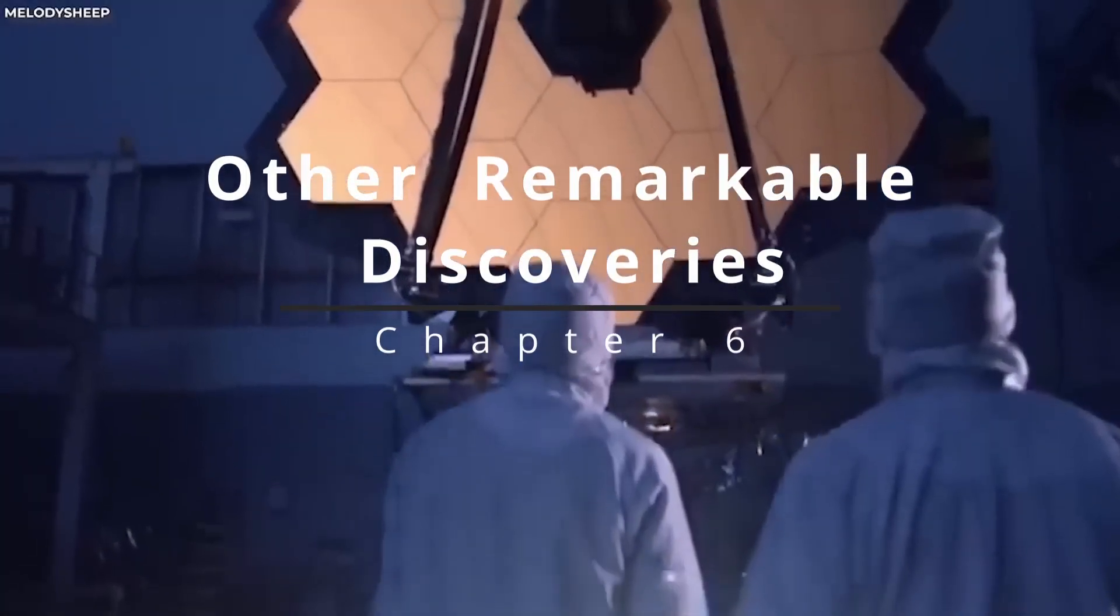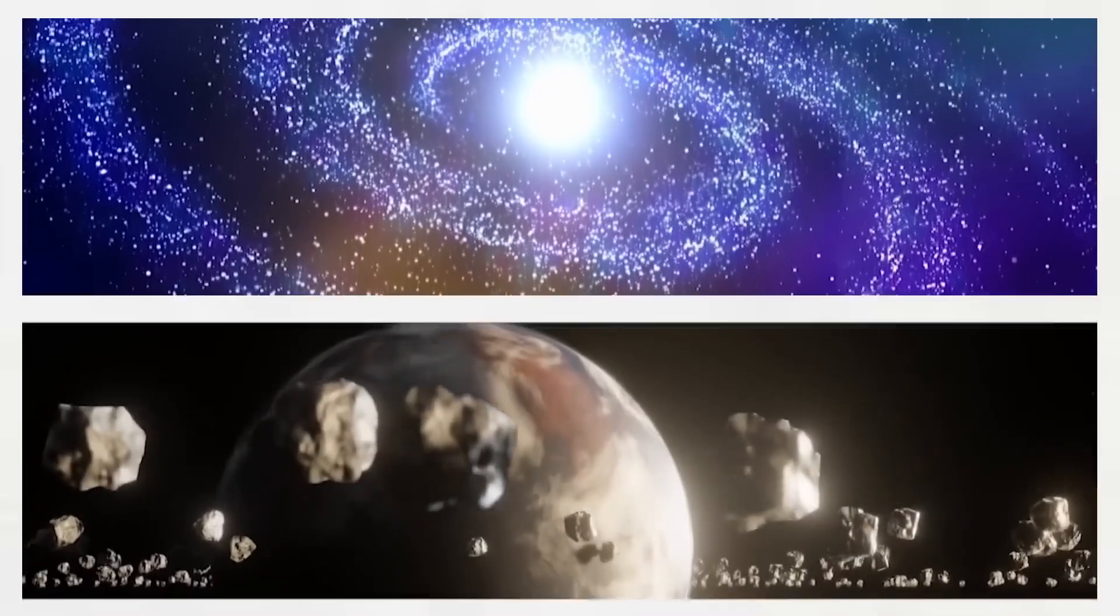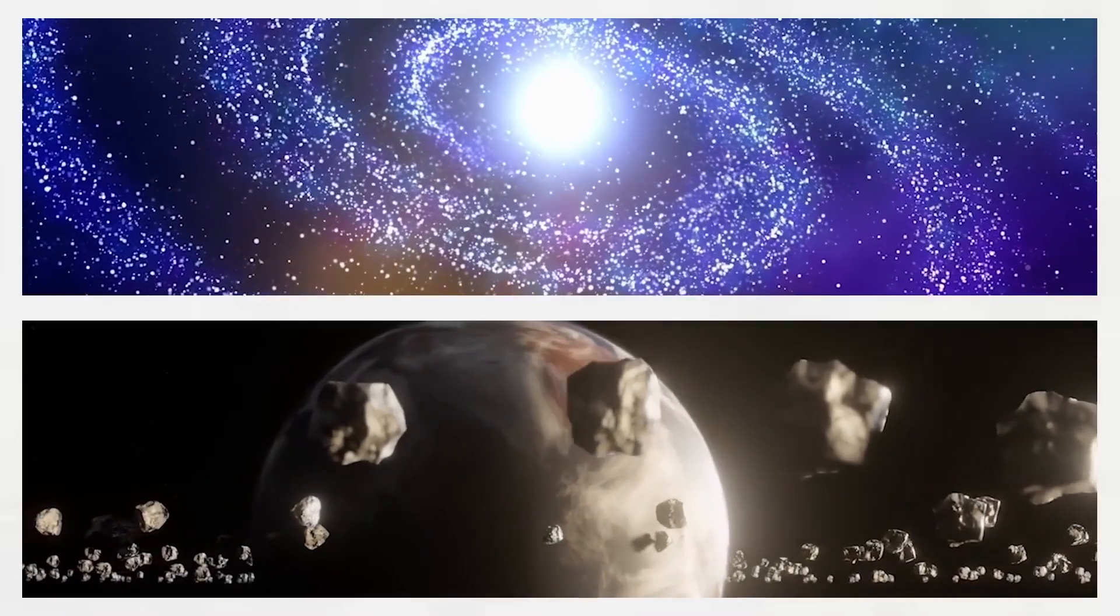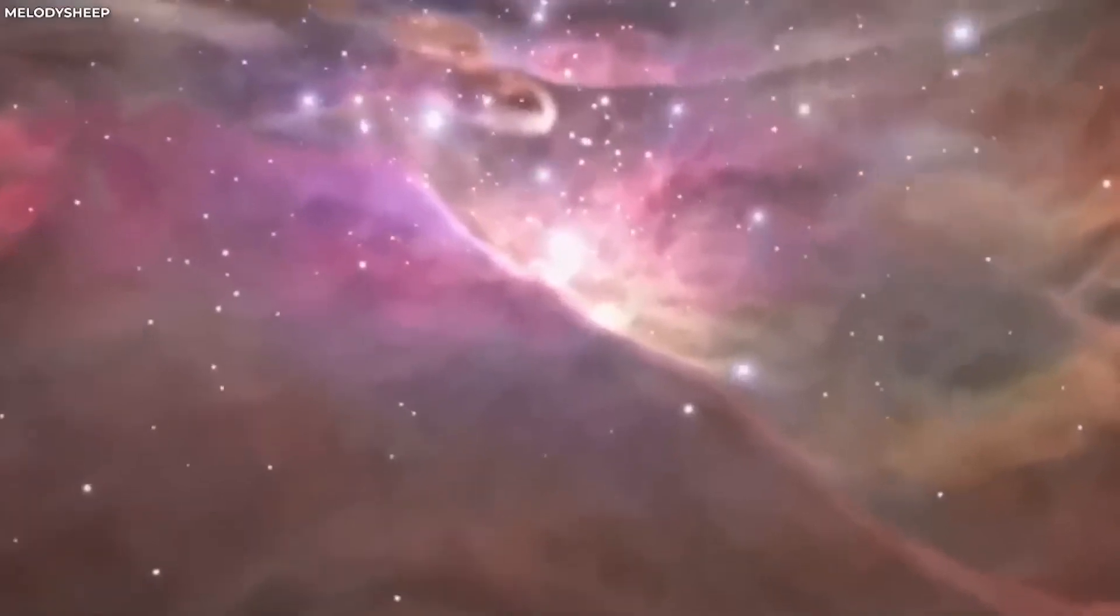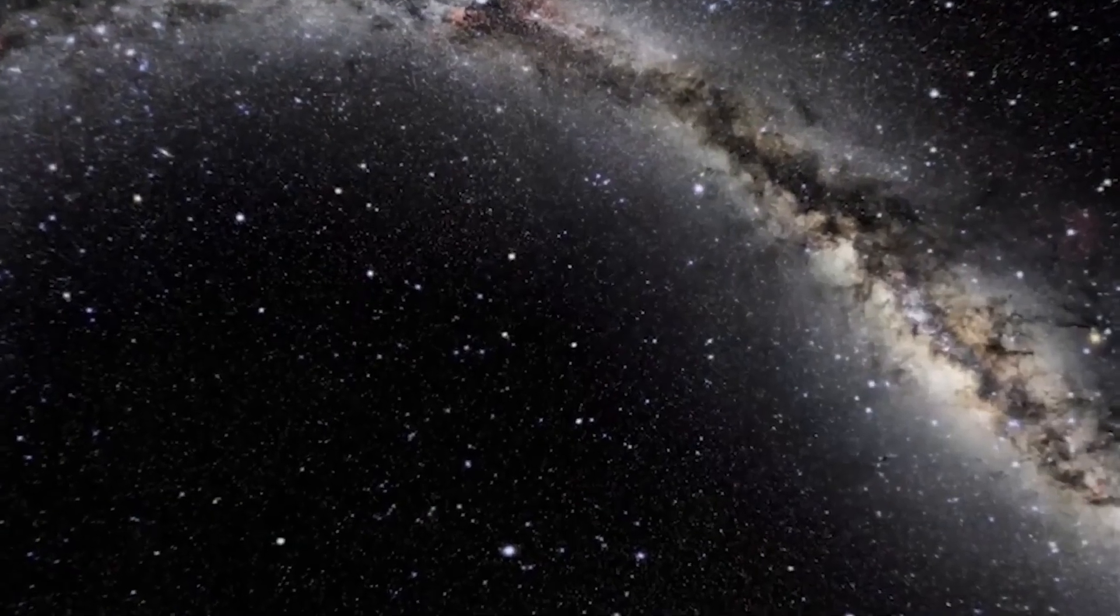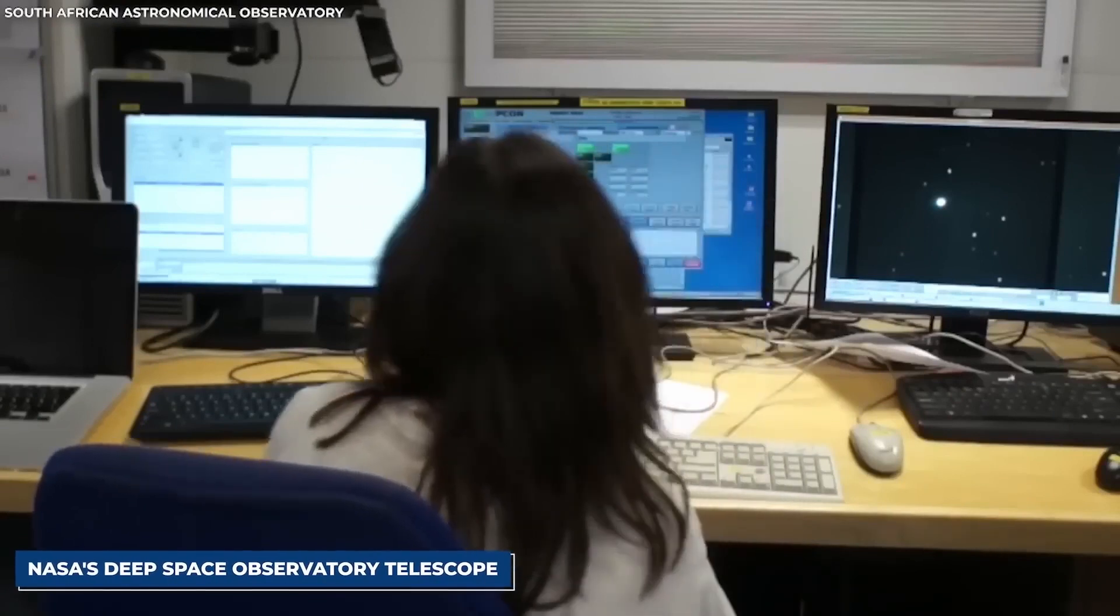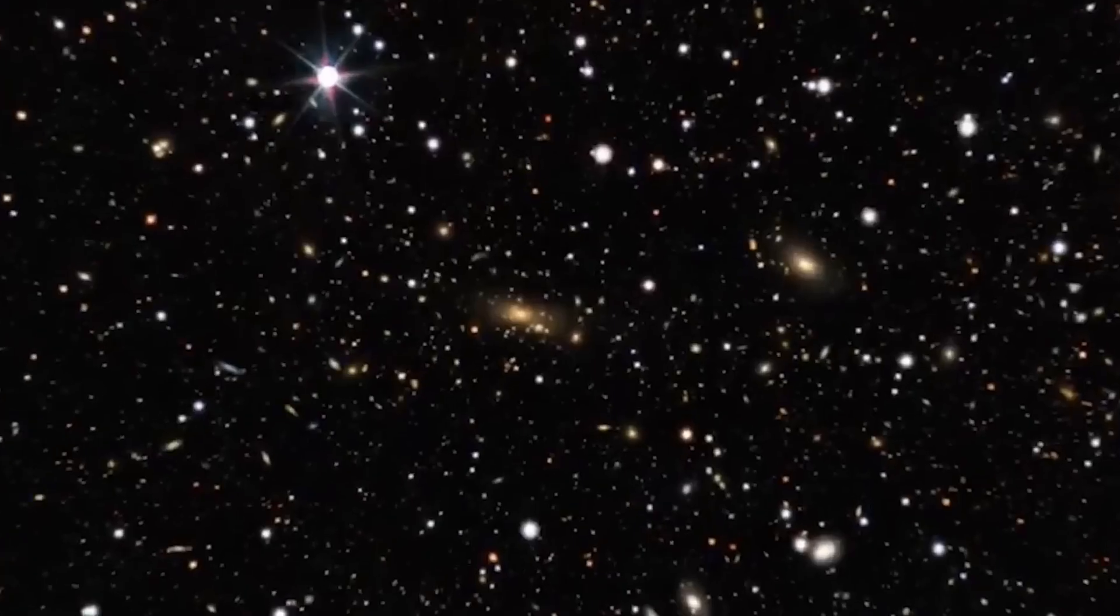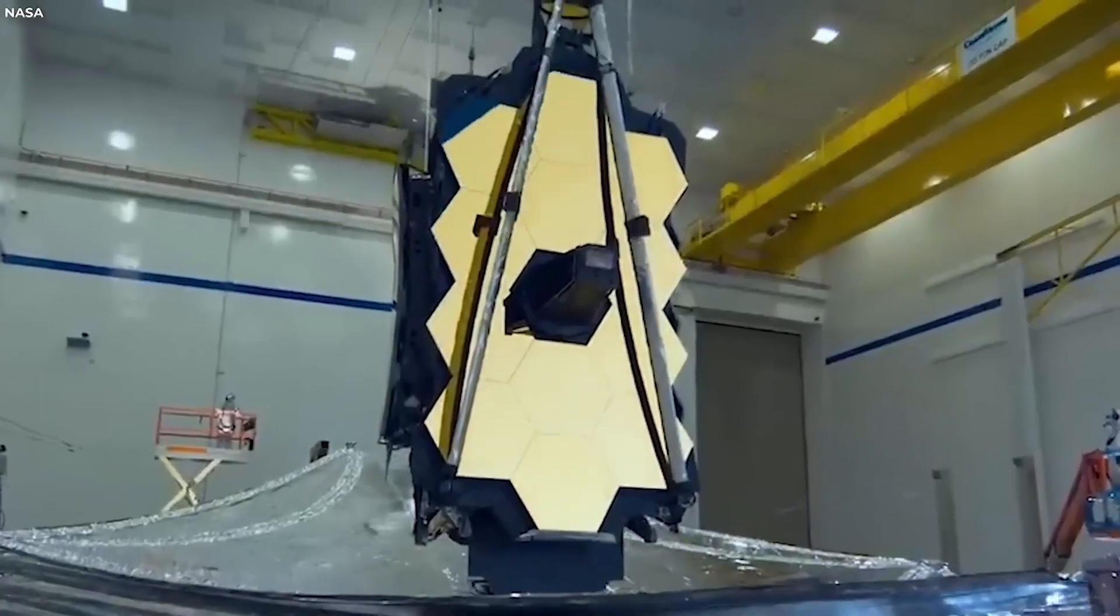Chapter 6. Other Remarkable Discoveries. In the summer of 2022, the James Webb Space Telescope began transmitting data that would forever change our understanding of the cosmos. Within days of its deployment, Webb's advanced instruments started unveiling secrets of the universe, revealing thousands of galaxies far older and more distant than we had ever imagined. One of the telescope's most profound capabilities lies in its ability to capture light from cosmic entities, including exoplanets and nascent stars. This is no small feat, as it sheds light on the compositions and trajectories of these celestial bodies, some located hundreds of light-years away from Earth.